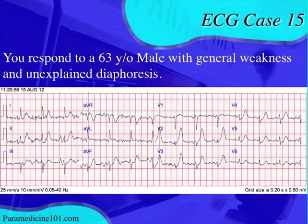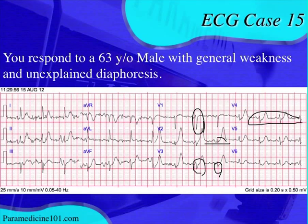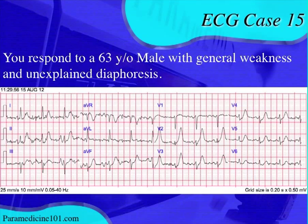Looking at the precordial axis, it's hard to tell due to the artifact. V1 is definitely mostly negative; V2 is hard to read but looks mostly positive; V3 looks mostly negative; V4 is almost isoelectric. With this much artifact it's difficult to know where the baseline is, so we can't reliably determine the precordial axis, and we'll move on.